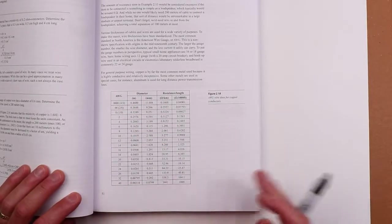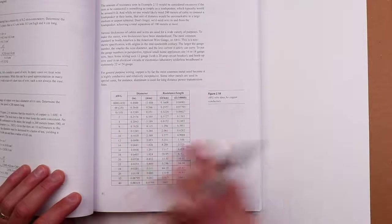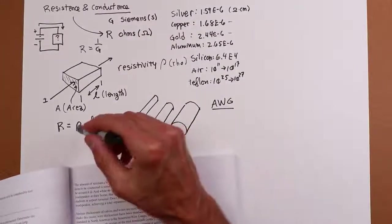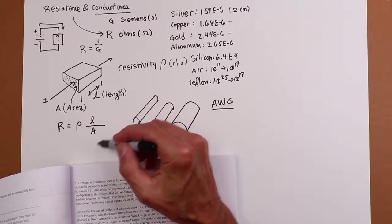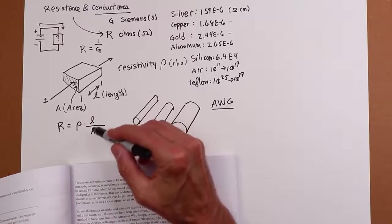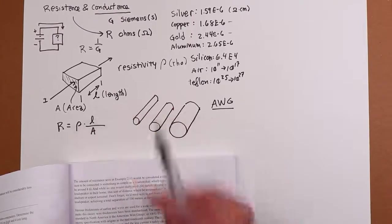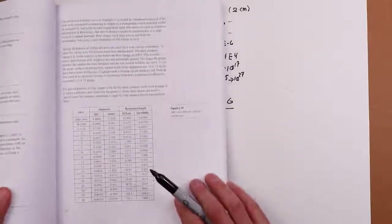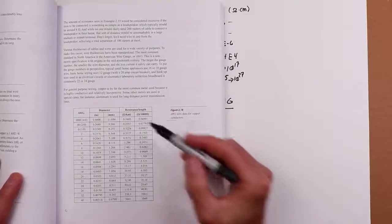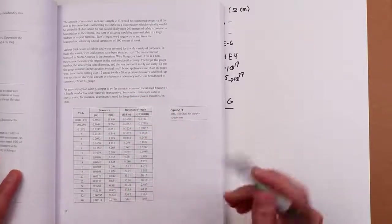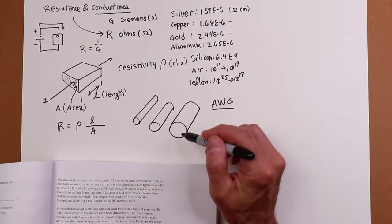Since we know this is going to be made out of copper, virtually all wire, and there are some exceptions, but general purpose wire is going to be made out of copper, so we know what the resistivity is. We know this, and the gauge tells us what the area is, so we can figure out resistance per unit length. Resistance per unit length. And this is what we see. Now AWG, the smaller the number is, the bigger the diameter.